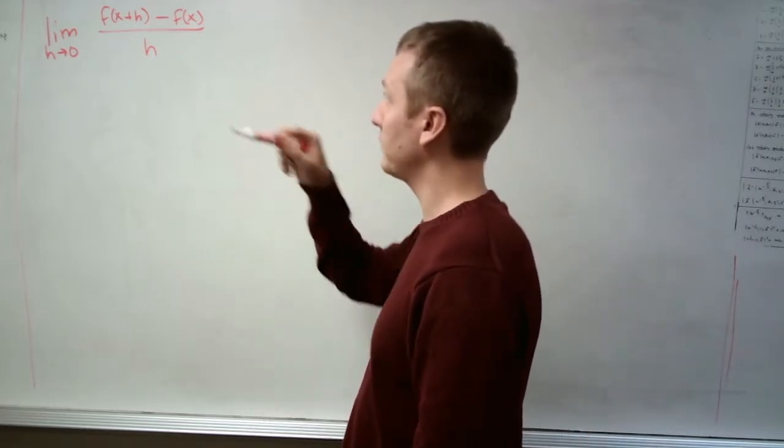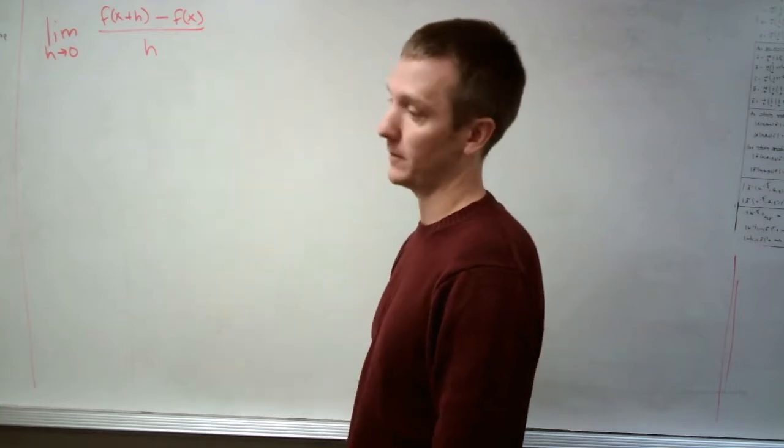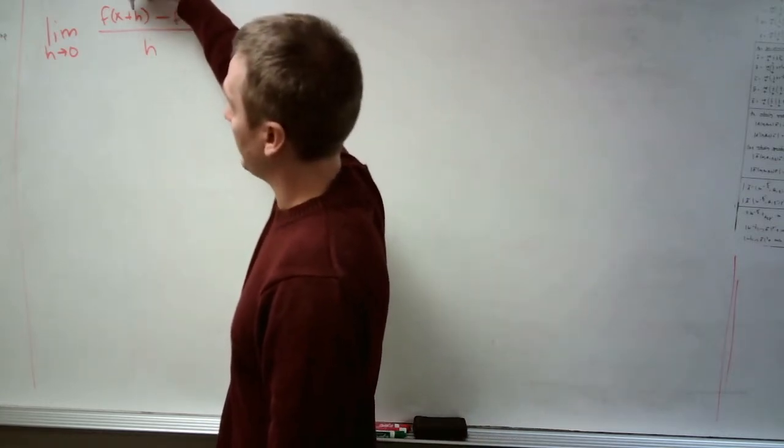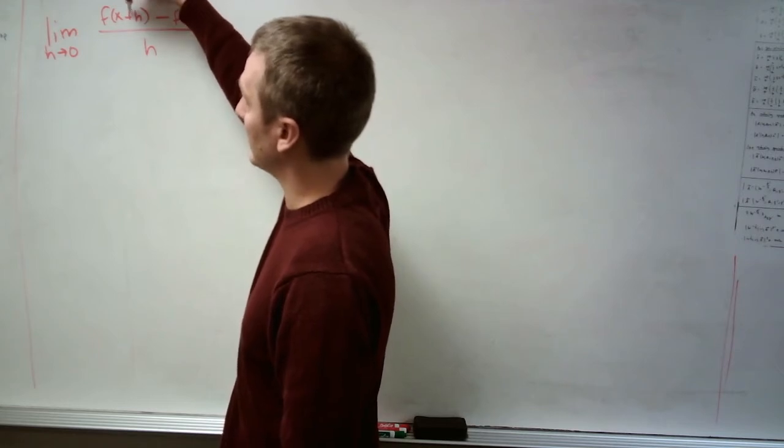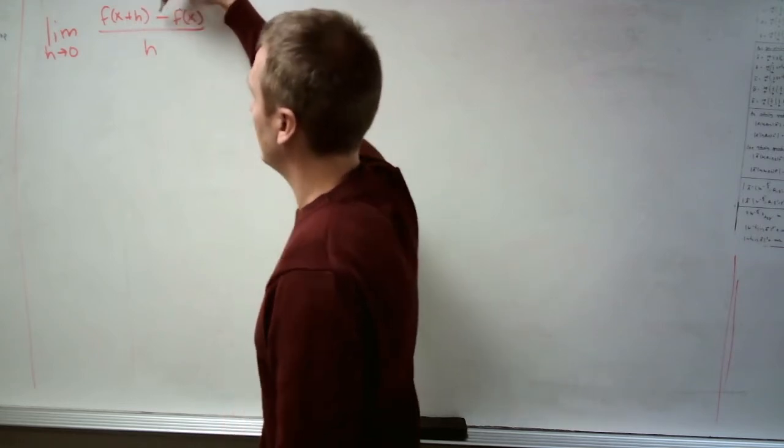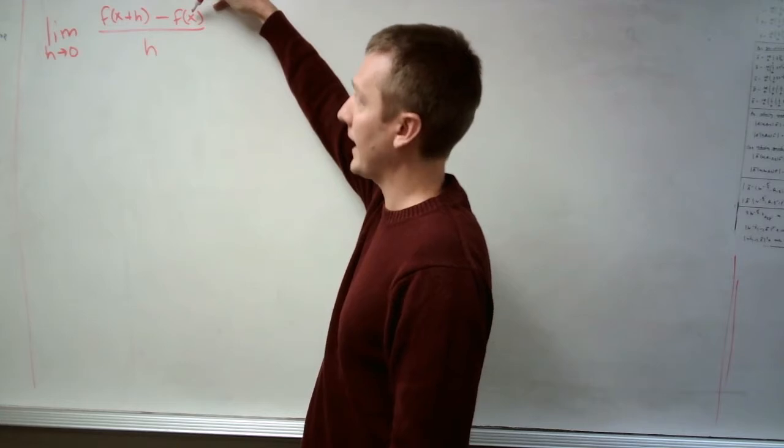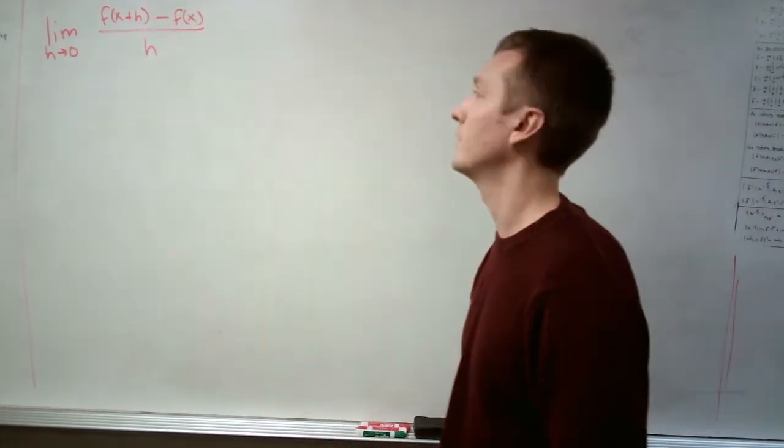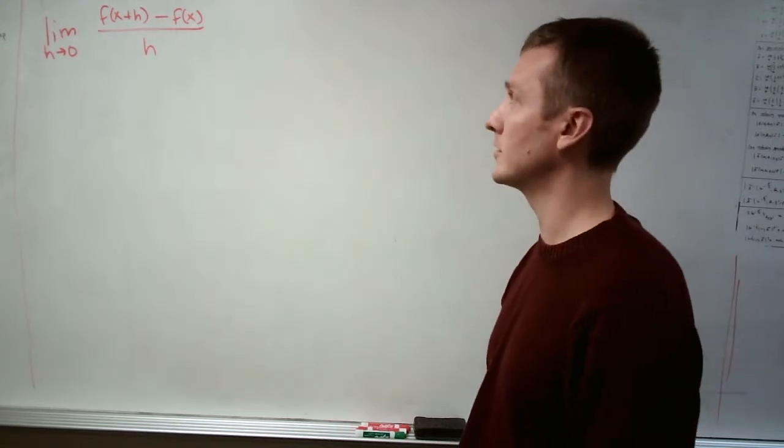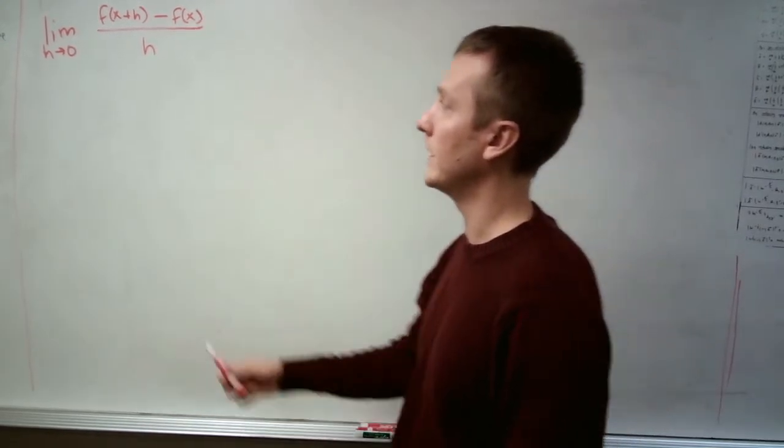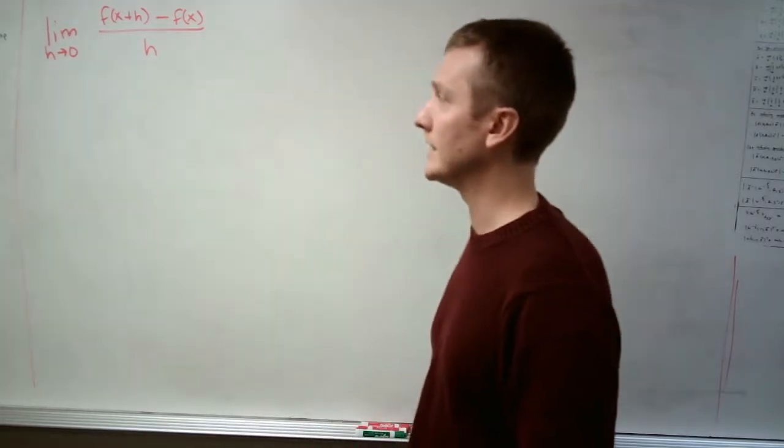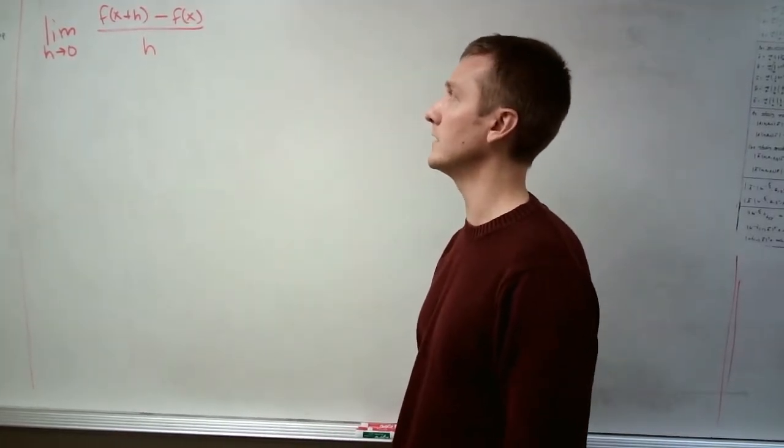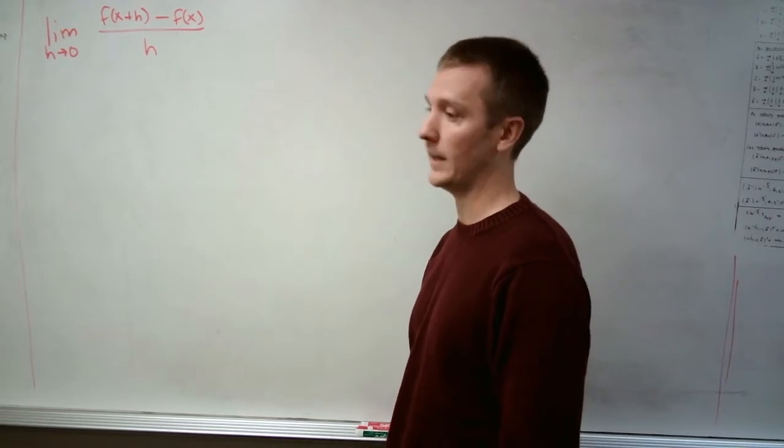Remember that whenever we're looking for a derivative, we're looking to find this limit. This limit where we're taking our function evaluated at x plus h, that's a little bit offset from x minus our function at x divided by h. This essentially is looking at the slope of that secant line, and as h goes to 0, the instantaneous slope emerges from how these average slopes converge to the instantaneous slope of our function at x.